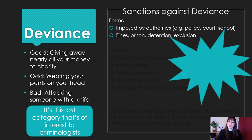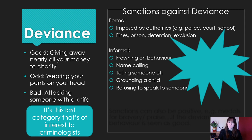There are certain sanctions that happen against deviance. There are formal sanctions — these are imposed by authorities such as the police, court, or schools: fines, prison, detentions, or exclusion. Informal sanctions could be things like frowning on behaviour, tutting, name calling, telling someone off, grounding a child, or refusing to speak to somebody. So if somebody has behaviour that you don't agree with or you think is deviant, just stop talking to them — stop that communication.